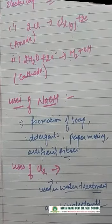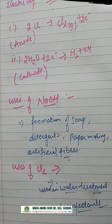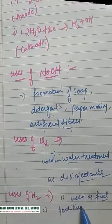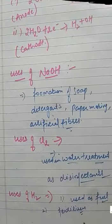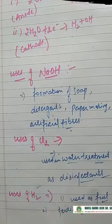Chlorine gas is used in water treatment and also as a disinfectant. Hydrogen gas is used as a fuel in rockets and aircraft. It is also used in the making of fertilizers — for the formation of ammonia, hydrogen gas is used.